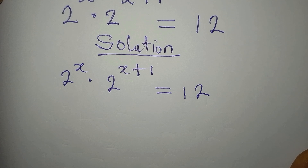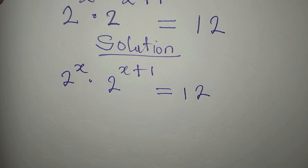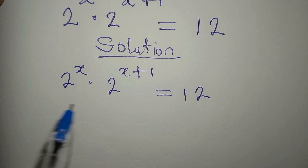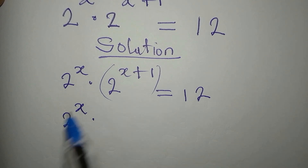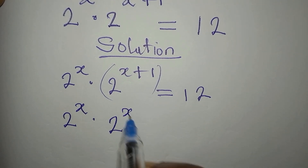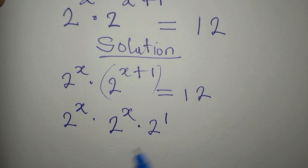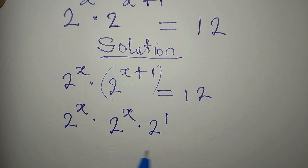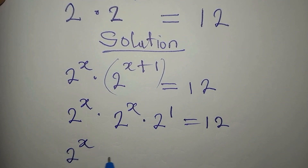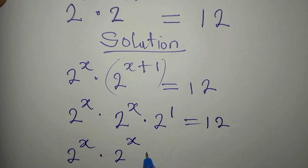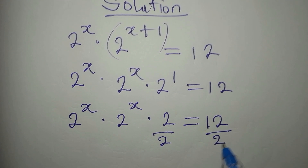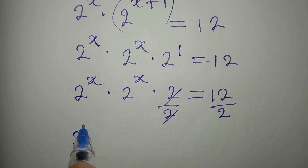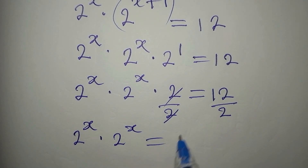This is not difficult to deal with if you know what to do. We have 2 to the power of x multiplied by 2 to the power of x plus 1, and we can rearrange this so we have 2 to the power of x multiplied by 2 to the power of 1. This means we have 2 to the power of x times 2 to the power of x times 2 equals 12. So we divide by 2, and now 2 to the power of x times 2 to the power of x equals 6.